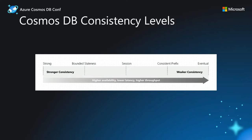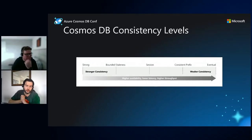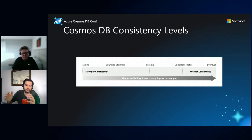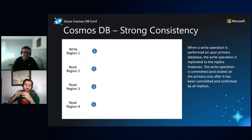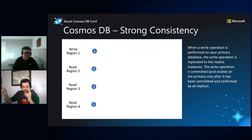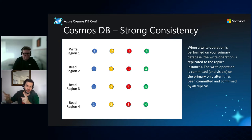Cosmos DB offers five consistency level options, which are important when planning for availability. The strongest is 'Strong' and the least strong is 'Eventual.' With Strong consistency, when you write to a region — say, one write region and three read regions — it commits on all regions simultaneously, waiting for data to replicate everywhere before acknowledging the write. This guarantees every region is identical at all times, but comes at the cost of higher write latency.